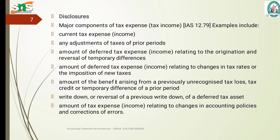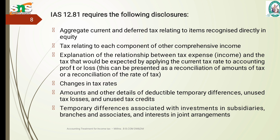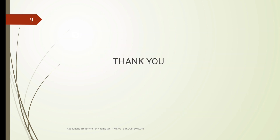IAS 12.8 requires the following disclosures: aggregate current and deferred tax related to items recognized directly in equity; tax related to each component of other comprehensive income; and an explanation of the relationship between tax expenses and changes in tax rates. Thank you.